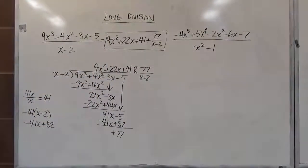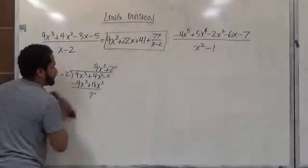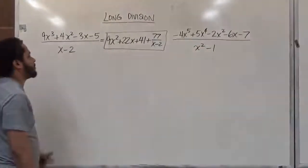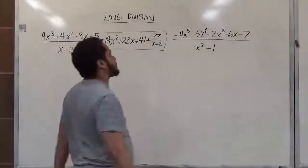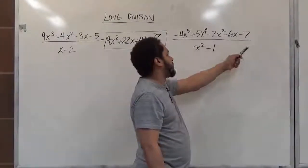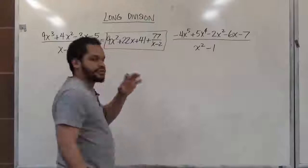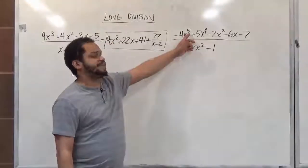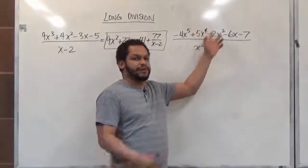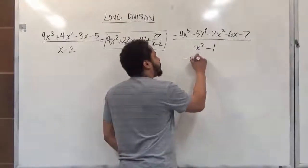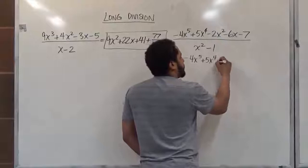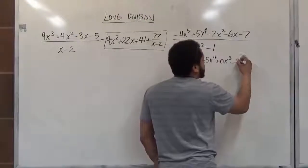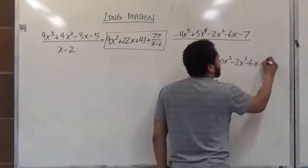Now let's continue with the second problem. Before we begin, we need to fix the way it looks — we're missing exponents on the top and bottom. Exponents should always go in descending order from highest to lowest with no exceptions. Here we have the fifth power, the fourth power, but no third power — we need to fill that in. So we have negative 4x to the fifth, positive 5x to the fourth, we add 0x cubed as a placeholder, then minus 2x squared, minus 6x, minus 7.